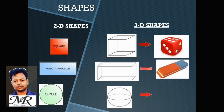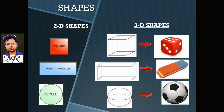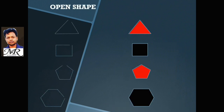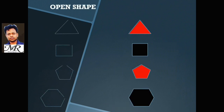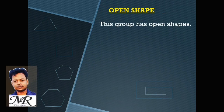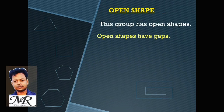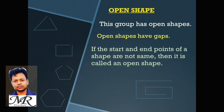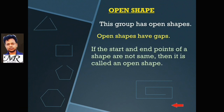Open Shapes. This group has open shapes. Open shapes have gaps. If the start and end points of a shape are not the same, then it is called an open shape.